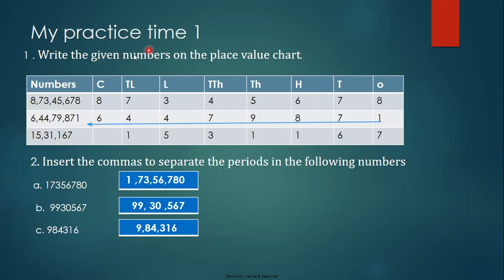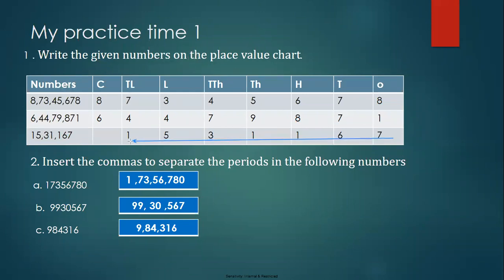I have one more example here. It is a seven-digit number. So a seven-digit number goes like this: ones, tens, hundreds, thousands, ten thousands, lakhs, and ten lakhs. So you can see how it goes from ones to ten lakhs.